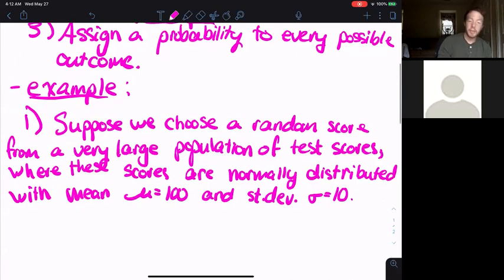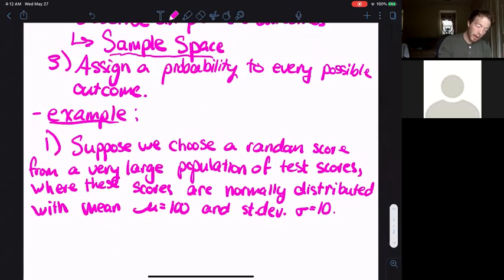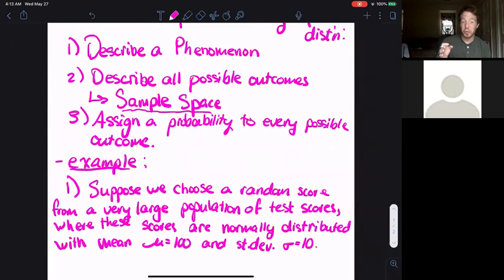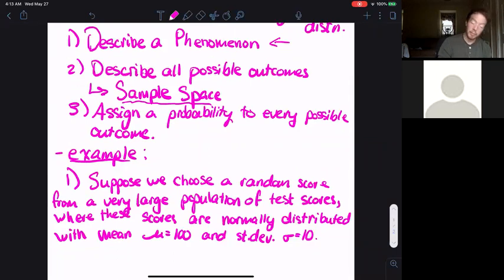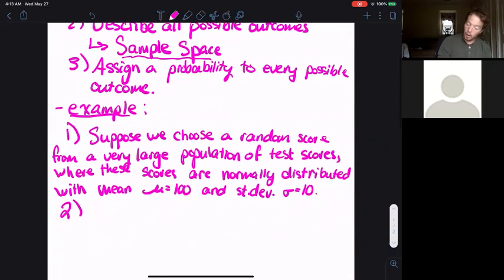This should look like many of the normal problems that we've done so far in this class. I've described a problem, it looks like a normal distribution. But in the context of defining a probability distribution, I've only done this first step. How would I do the second step, describe all possible outcomes?